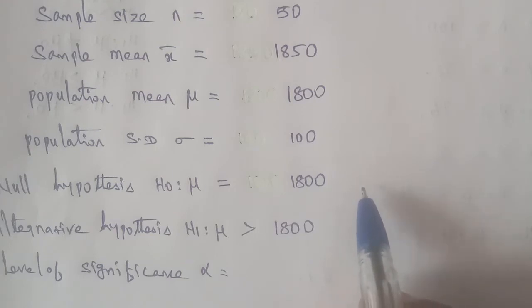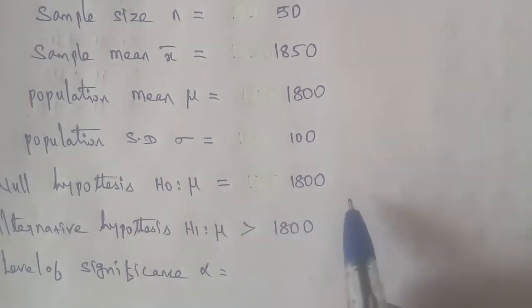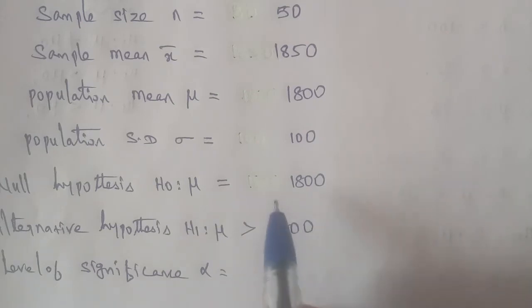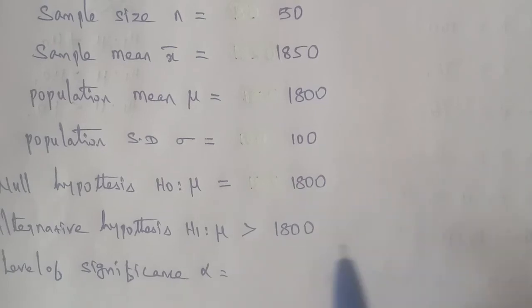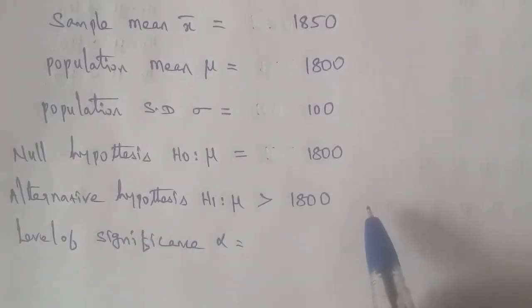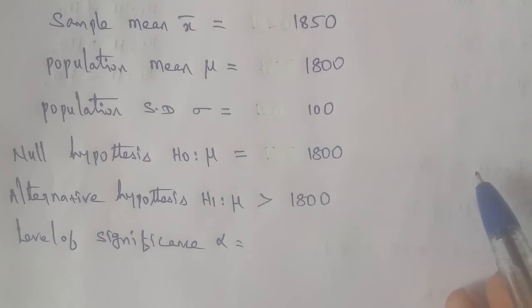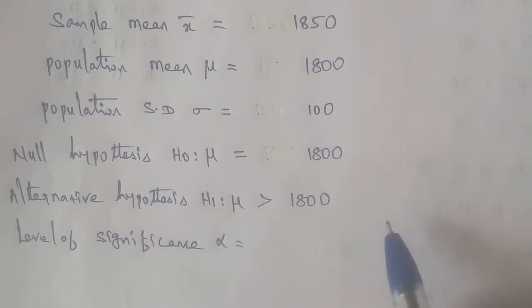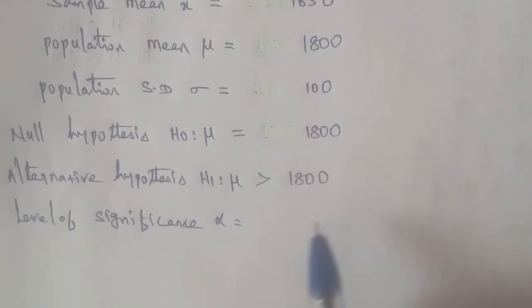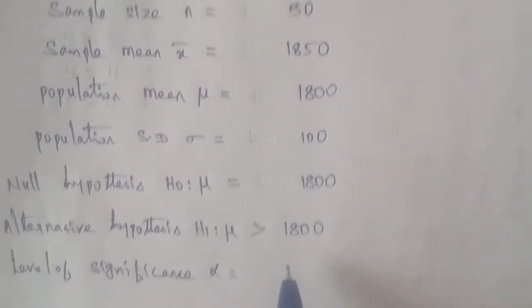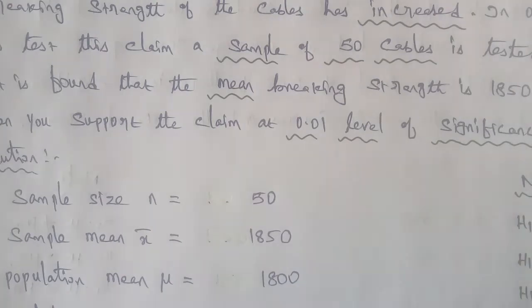The breaking strength of the cable has not increased — that is the null hypothesis. The breaking strength of the cable has increased — that is the alternative hypothesis. Level of significance is 0.01.